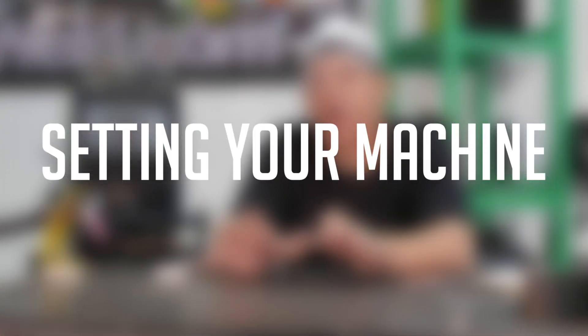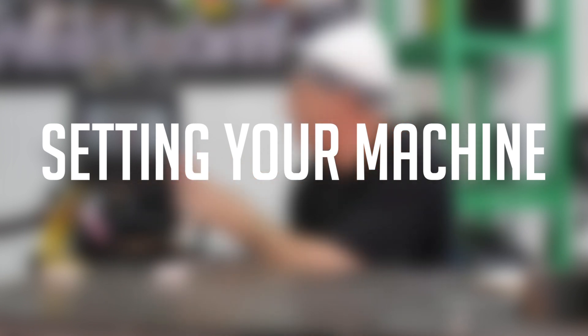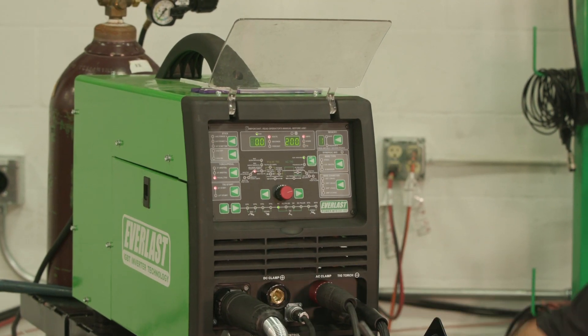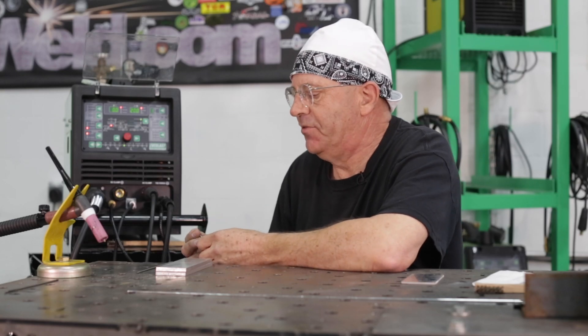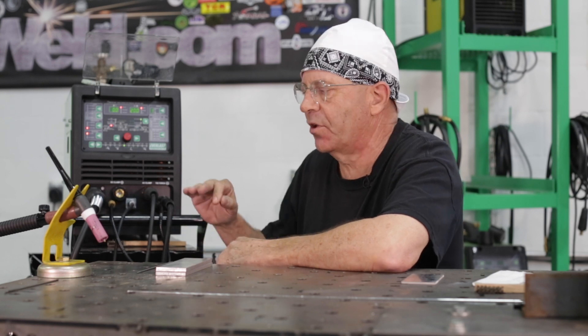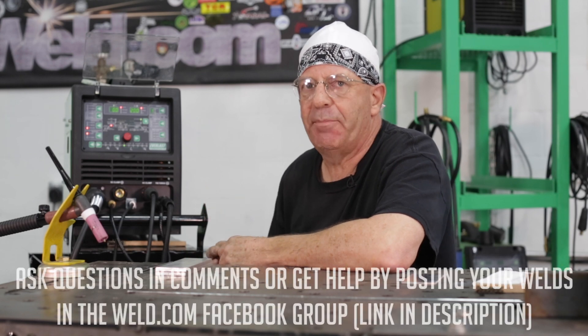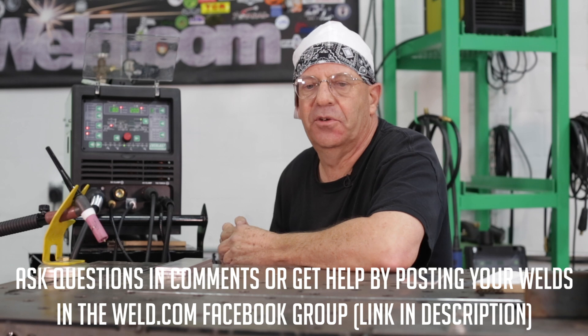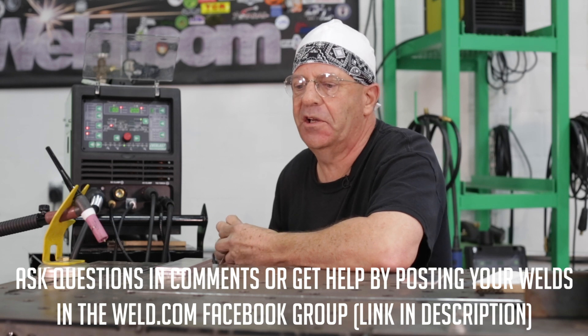Don't be overwhelmed when you look at this machine because there's a whole bunch of bells and whistles. This is a multi-process machine, but just like setting up on DC TIG for carbon steel, it's fairly easy to understand when you understand the functions. We're going to identify them, tell you how to adjust them, describe what happens, and hopefully we can help you out.